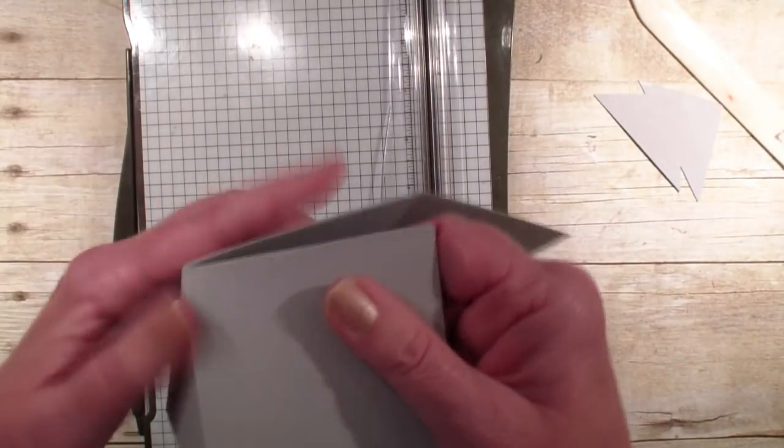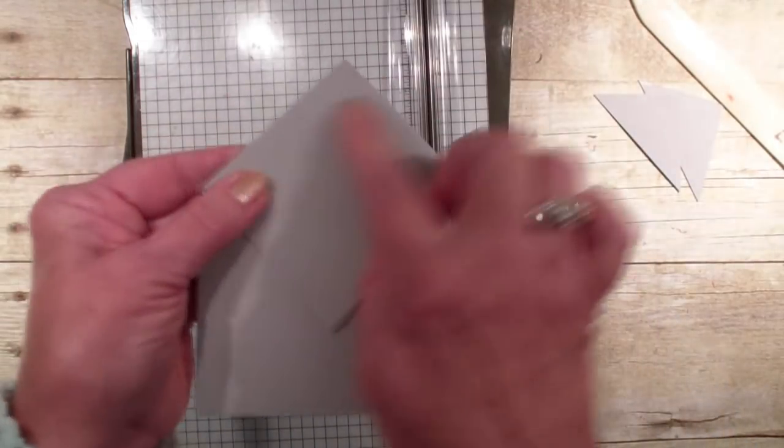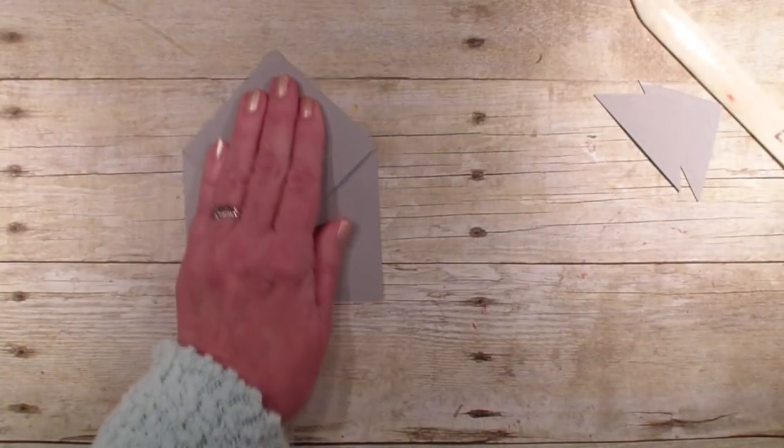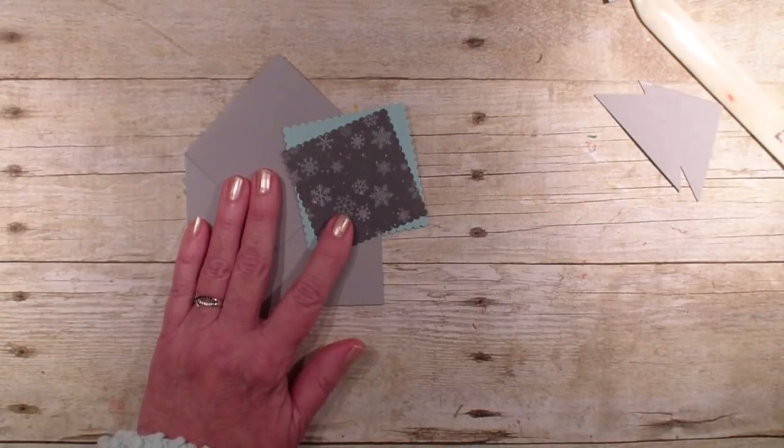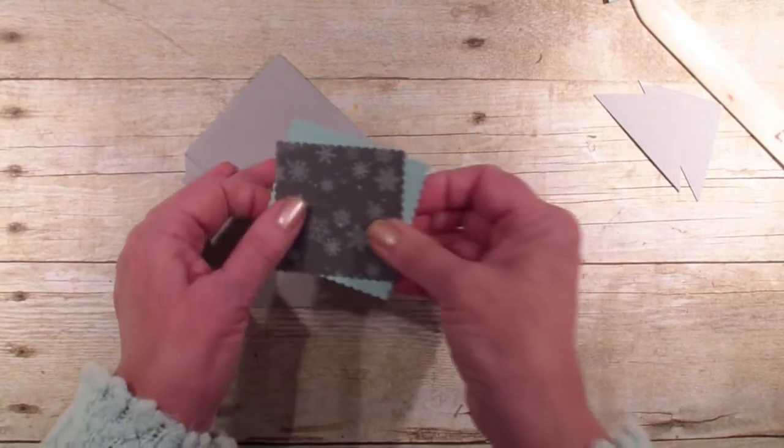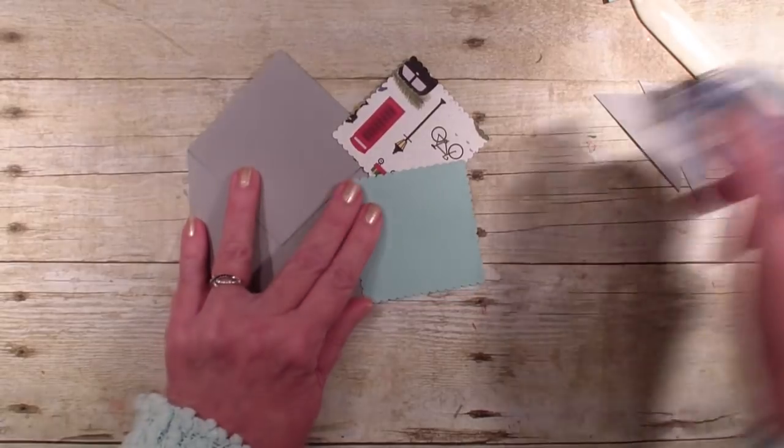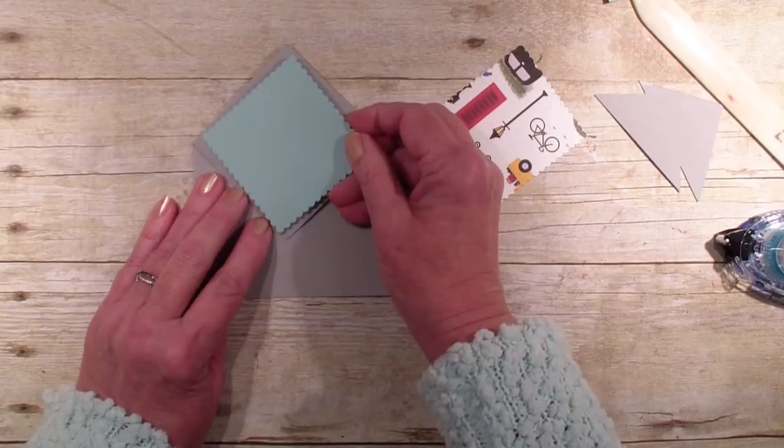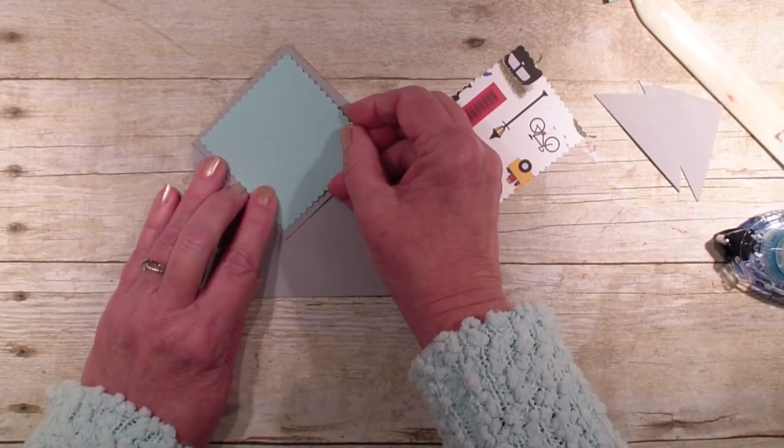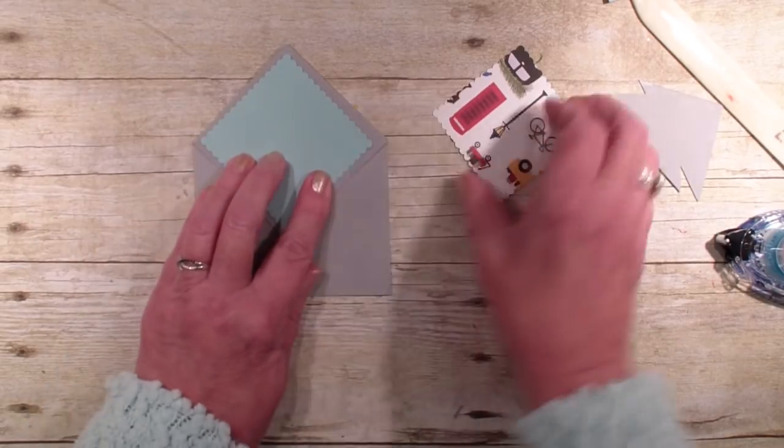And so that brings that diamond shape on the front of our card. Now I have already taken the layering squares and used the scallops. I have the soft sky. And so I'm going to just lay that right there like so.